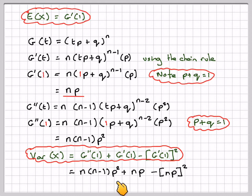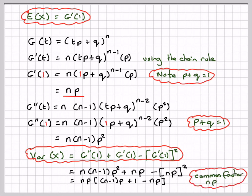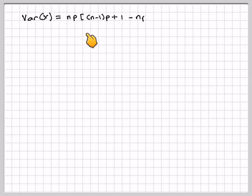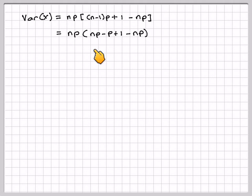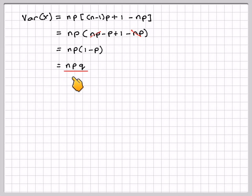There is a common factor of np, leaving n(n-1)p + 1 minus np. Expanding the bracket gives np times (np - p + 1 - np). The np terms cancel, and we are left with np times (1 - p). Since 1 minus p equals q, we get the variance equals npq, which is what we expected. Thank you.